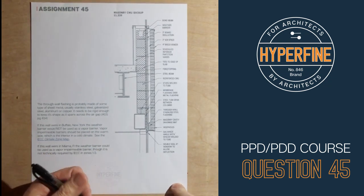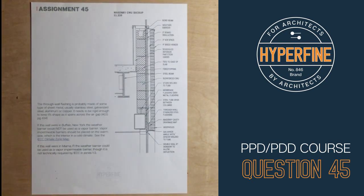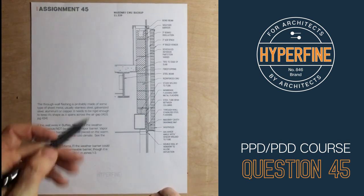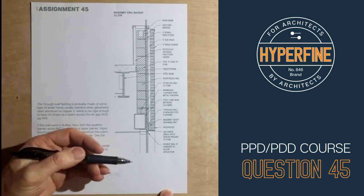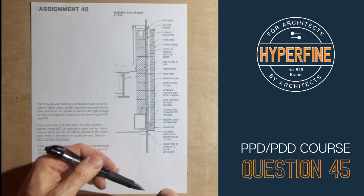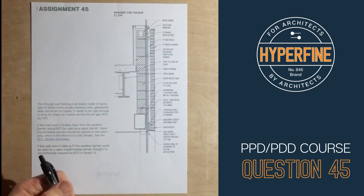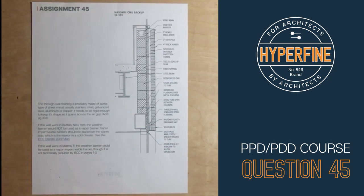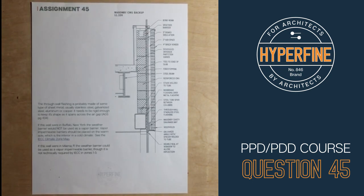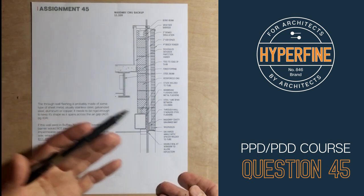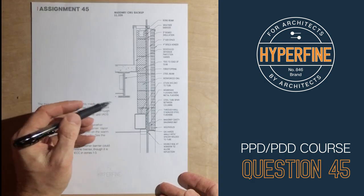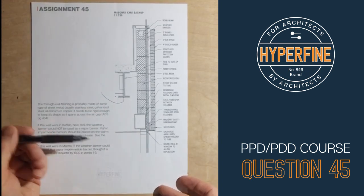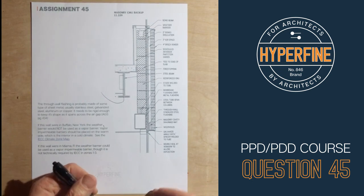Where I got into trouble is where I tried to make it a question about vapor barriers, and I was a little bit out of my element with this masonry construction. So let's talk about vapor barriers — what they mean and where they should go. My question was: if this wall is located in Buffalo, New York, do you think the water barrier doubles as a vapor impermeable barrier? My answer was no, because I was trying to get to the point that the vapor barrier goes on the warm side, and I was assuming the inside of the building was the warm side and not necessarily just the inside face of the insulation.